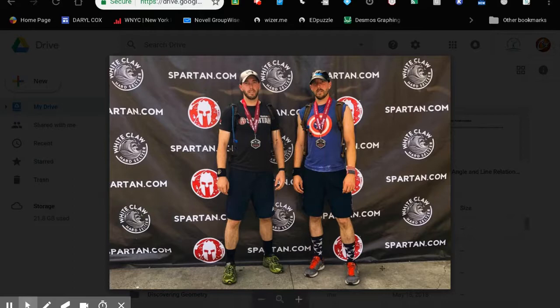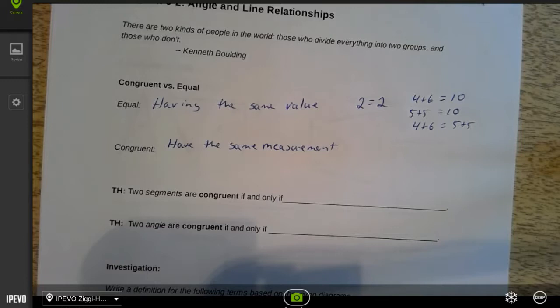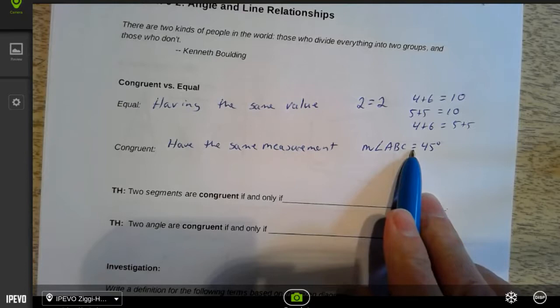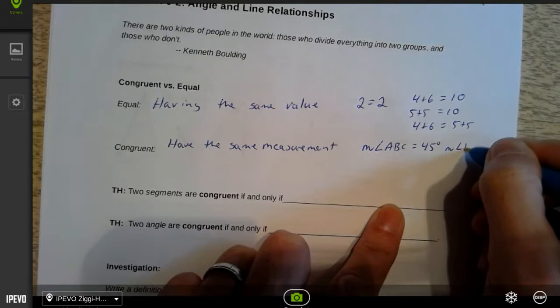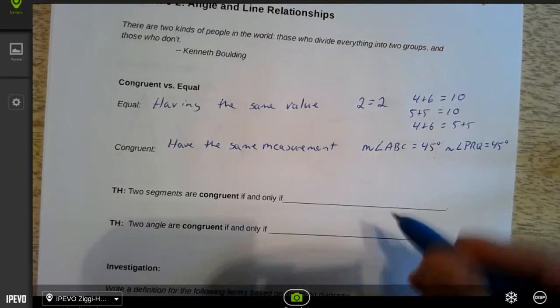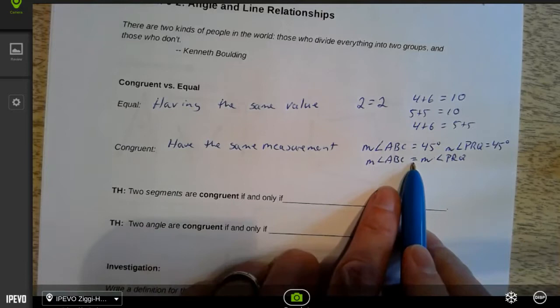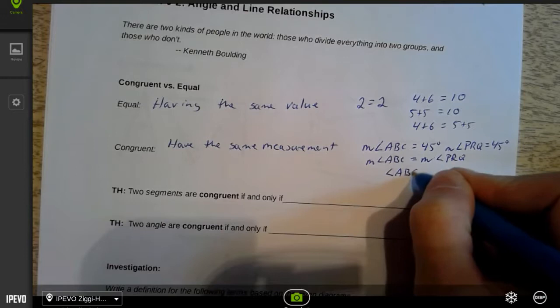But they're not the same person. So when we look at angles, we could say that the measurement of angle ABC equals 45 degrees. We're using equals there because we're actually giving it a value. I could say that the measurement of angle PRQ equals 45 degrees. So the measurement of angle ABC equals the measurement of angle PRQ. There I'm using different symbols - measurements are equal. But angle ABC is congruent to angle PRQ.